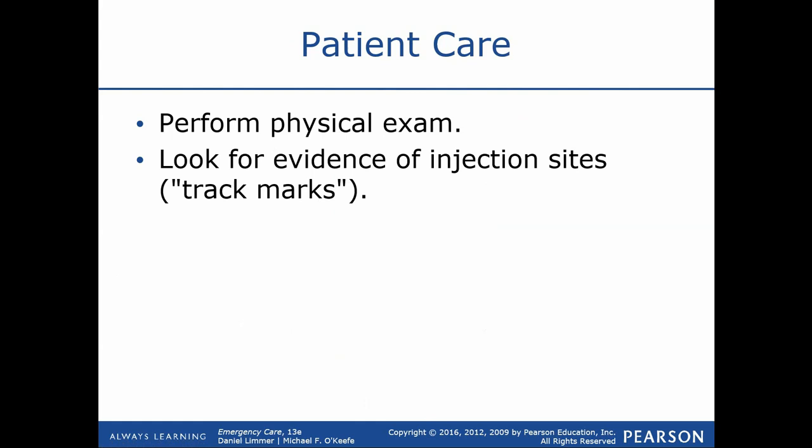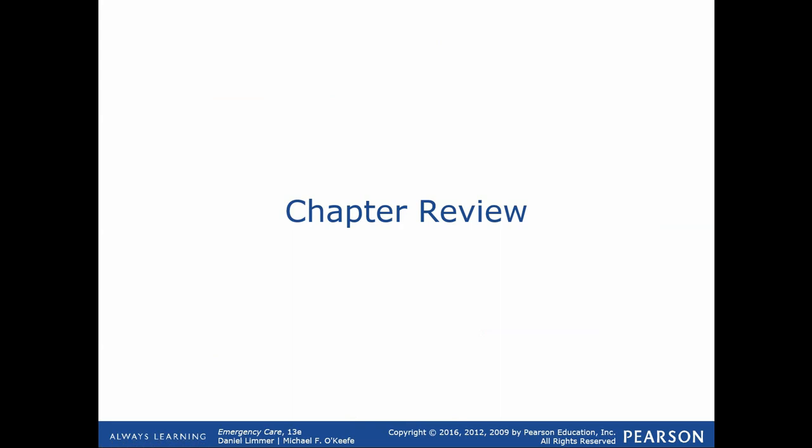That really wraps it up. Again, this is a broad chapter with a broad overview. Poisonings and overdoses cover a lot of ground — always be aware of your surroundings, identify the potential for hazardous material exposures, be more compassionate for patients with alcohol addiction, and always be aware of what could possibly be affecting your patient.